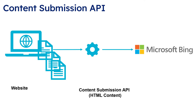The Content Submission API is different from the URL Submission API. With the URL Submission API you can only send URLs for Bing to crawl and index. With the Content Submission API, you not only send the URL but also send the HTML content, images, and so on directly to Bing to index.